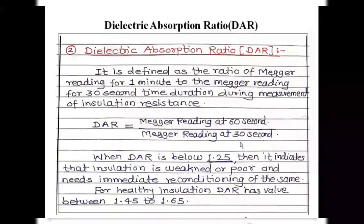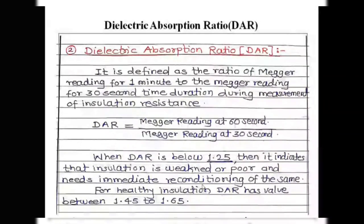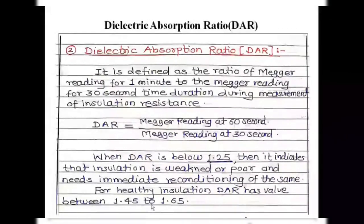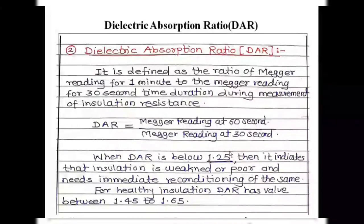DAR is a ratio, so it gives a number. If we get this ratio below 1.25, it indicates the insulation is weakened or poor, has absorbed moisture or impurities, and should be immediately sent for reconditioning. If the DAR falls in the range 1.45 to 1.65, the insulation is in good healthy condition and no reconditioning is needed. If the value is between 1.25 and 1.45, the insulation has deteriorated slowly but immediate action is not required — reconditioning can be done within a certain period of time.